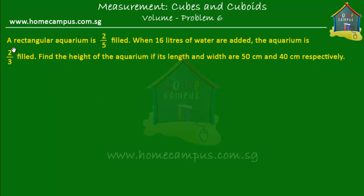A rectangular aquarium is two-fifths filled. When 16 liters of water are added, the aquarium is two-thirds filled. Find the height of the aquarium if its length and width are 50 centimeters and 40 centimeters respectively.